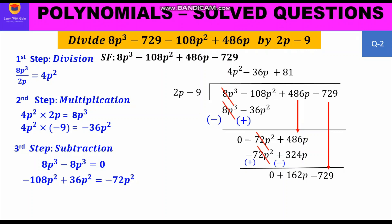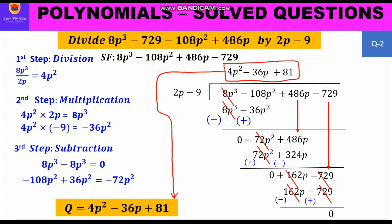Multiplication: 81 × (2p − 9) = 162p − 729. Write below the new dividend. Subtraction: change signs to −162p and +729. Then 162p − 162p = 0 and −729 + 729 = 0. The remainder is 0. So the quotient is 4p² − 36p + 81 and the remainder is 0.